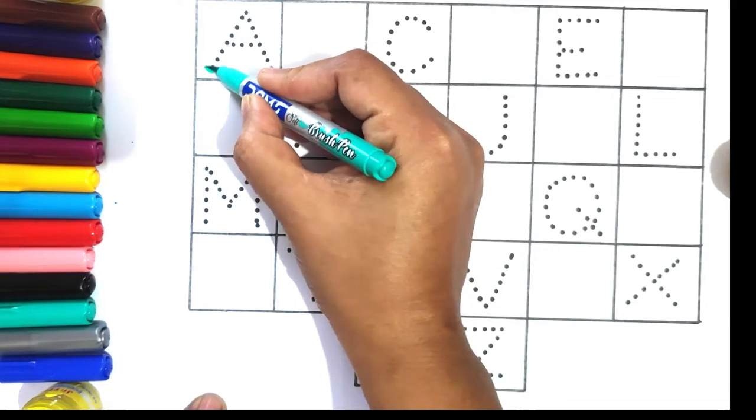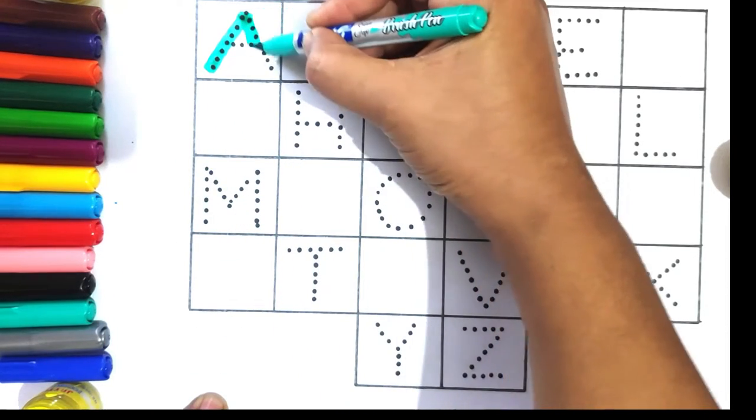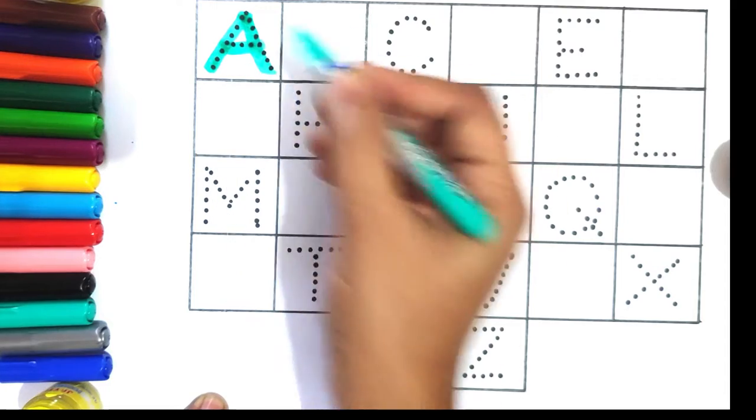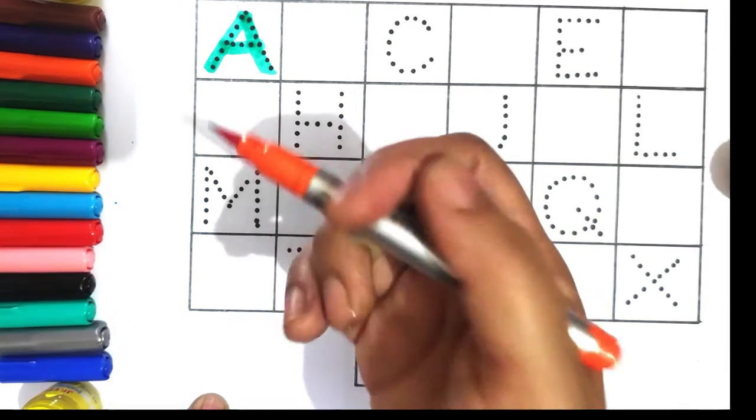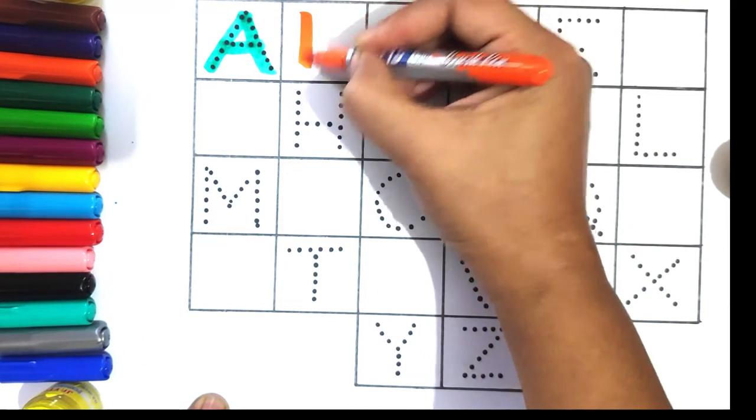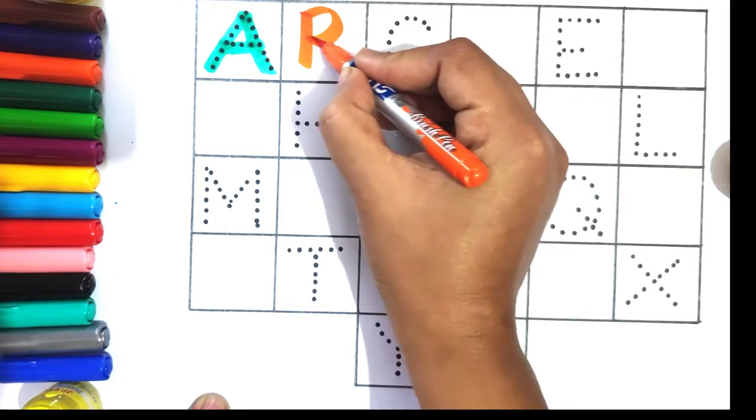Sea green color A, A for apple. Orange color B, B for ball.